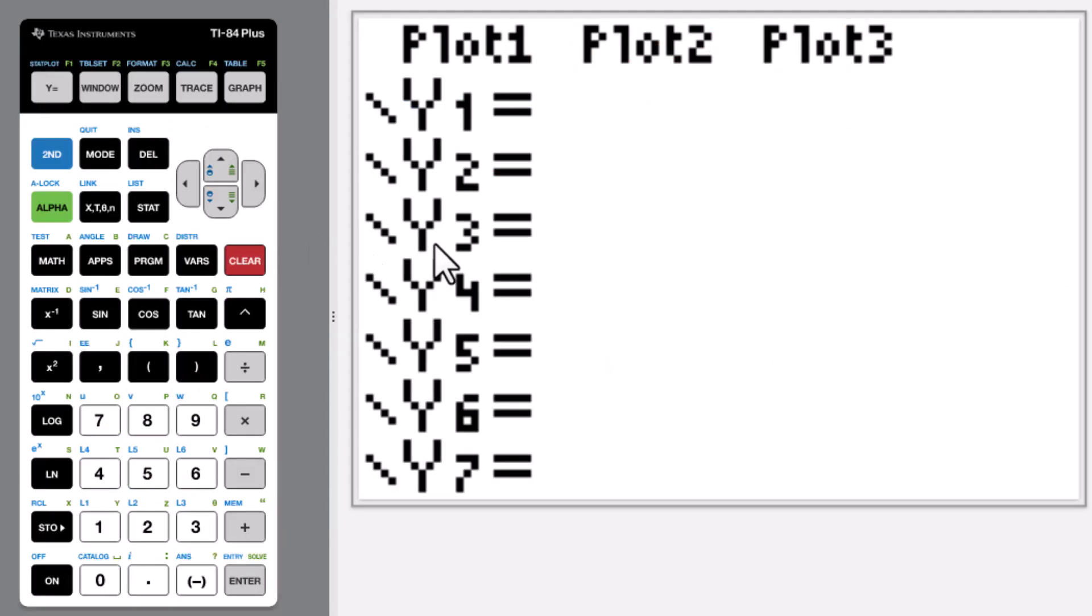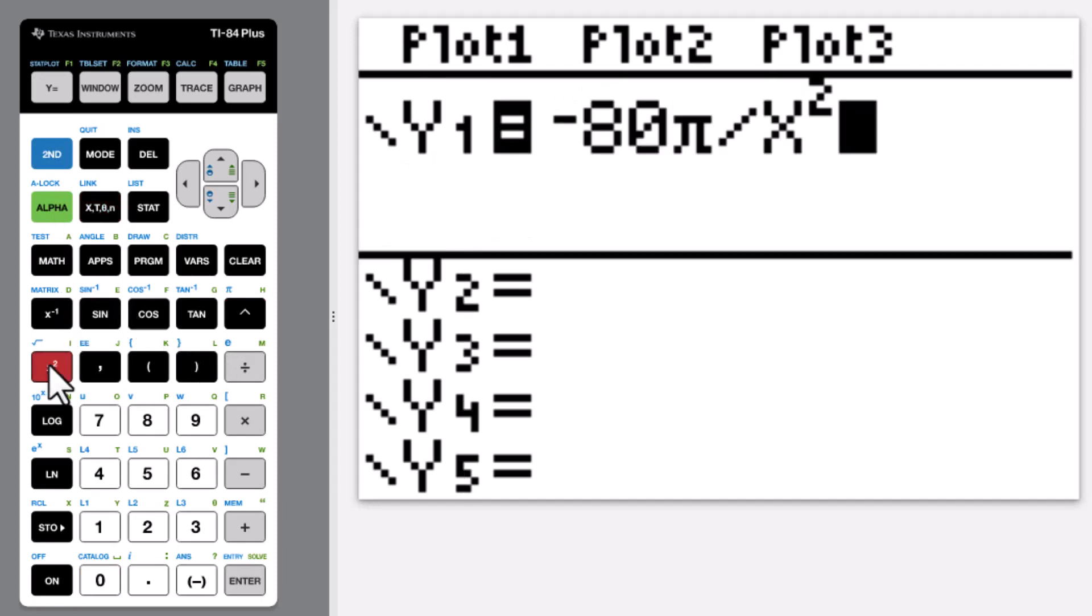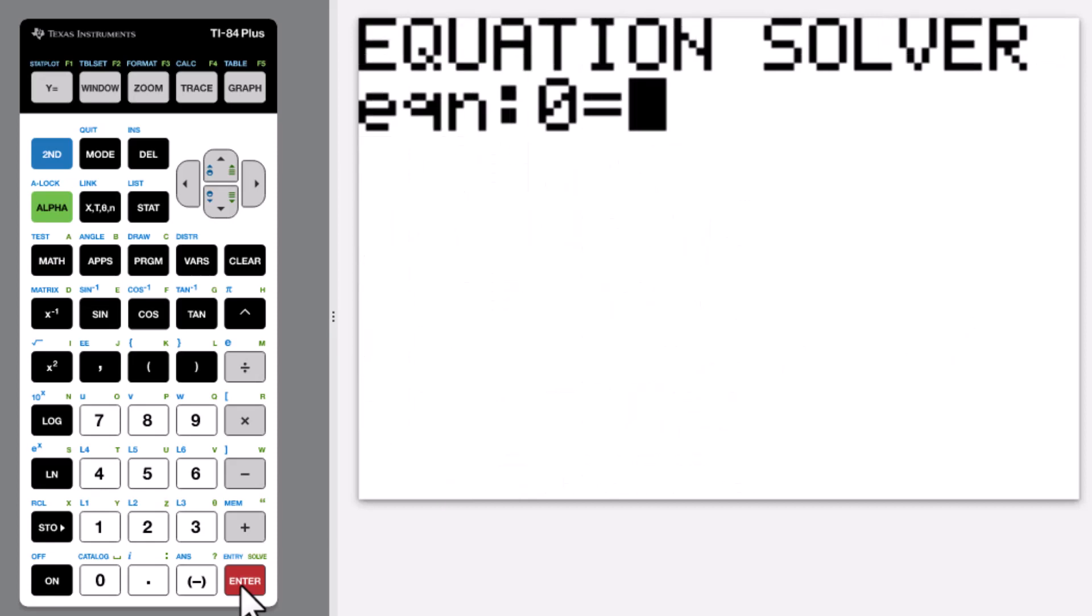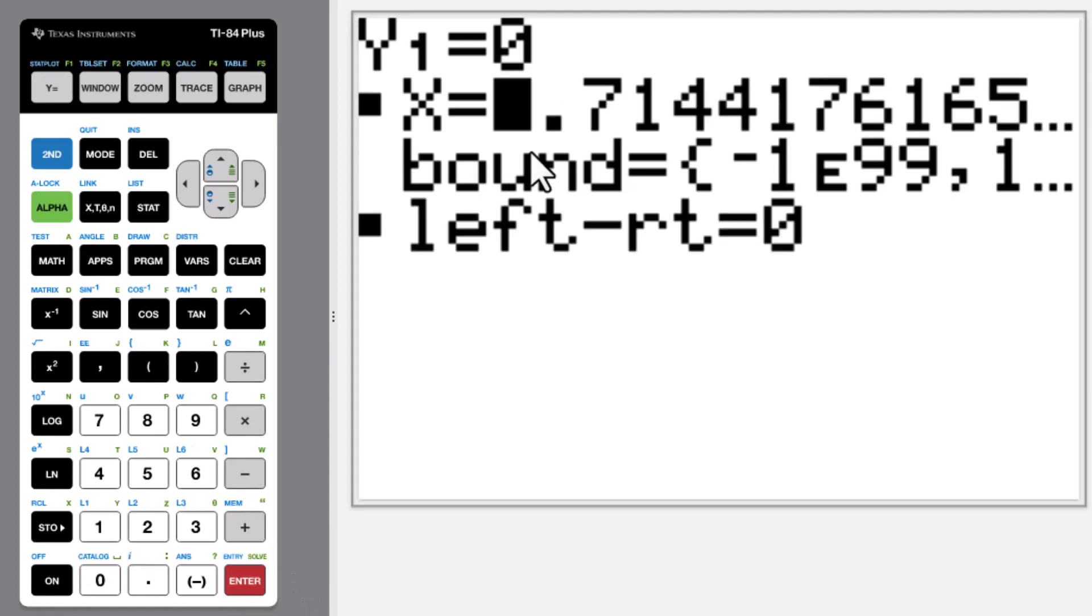By solver, go to y equals. -80π divided by r² - we will change r into x, then plus 4πx. Quit. Math equation solver. Enter, alpha, trace, y1. Enter the estimated value, let's put 10. Alpha, enter. x is 2.71.